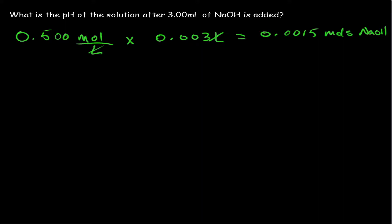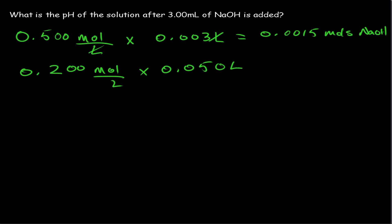That's how many moles of NaOH are being added to the flask. Now let's look at how many moles of HCl were in the flask to begin with. The concentration of HCl was 0.200 molar, and our flask had initially 0.050 liters, or 50 milliliters. Liters cancel out, and we're left with a value of 0.01 moles HCl. Now that we know the moles of HCl and NaOH, we can move on to our RISE table.